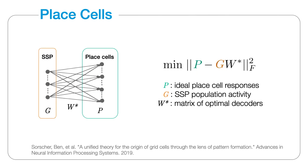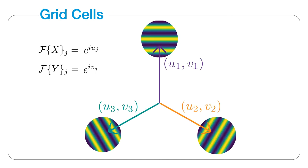But which basis vectors are best to use? Consider the task of decoding the responses of a large set of place cells from the SSP population. This would be our objective function: the squared Frobenius norm error between the ideal place cell responses and the decoded responses, where the G matrix is our SSP population's activity sampled across space. The form of the optimal G, given a non-negativity constraint, has been previously investigated. The neurons should have hexagonally patterned firing rates. If the phases of the basis vector components in the Fourier domain are in groups of three that sum to zero, then the neurons have hexagonal firing patterns, like grid cells.